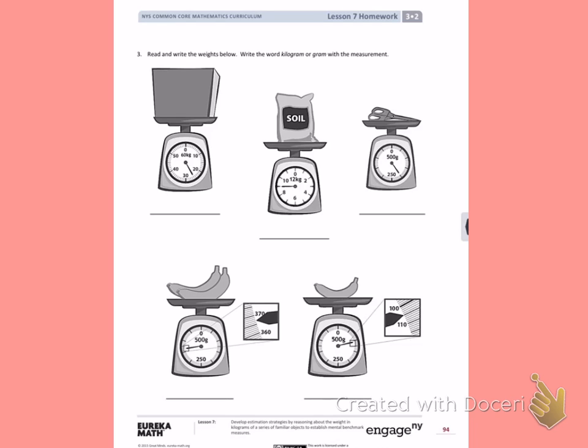The first scale is showing me that the total weight, if it's pushed all the way down, would be in kilograms. The arrow is pointing between the 20 and the 30. I can see that the tick marks are counting by 10: 10, 20, 30. To get from 20 to 30...